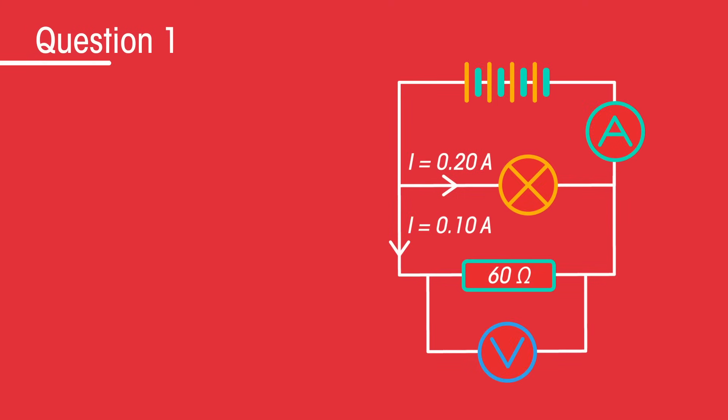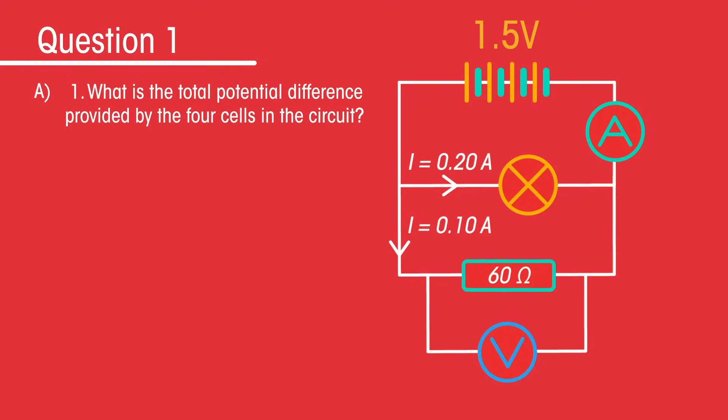Let's have a go at applying some of those rules. Each cell provides a potential difference of 1.5 volts. What's the potential difference provided by the four cells in the circuit? What will be the reading on the voltmeter?